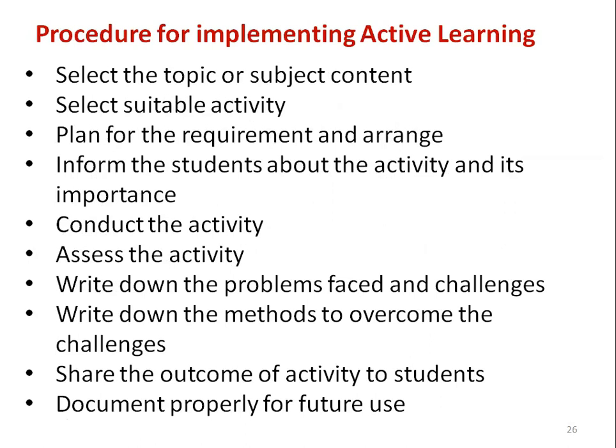Procedure for implementing active learning in the classroom: select a topic or subject content; select a suitable activity based on the subject requirement; plan for the requirements and arrange the infrastructure (for example, if you want to conduct the activity in the seminar hall, check availability of the PA system and all required infrastructure); inform the students about the activity in advance so they will prepare; conduct the activity; assess the activity; write down the problems and challenges faced; write down methods to overcome those challenges; share the outcome of the activity with the students; and document properly for future use.